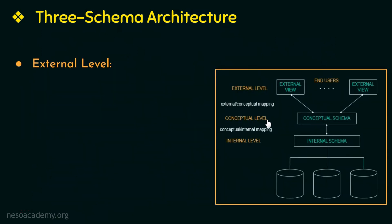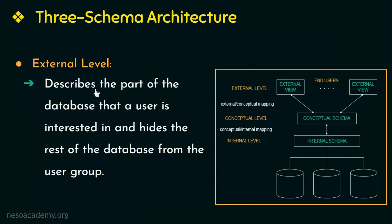The topmost level in our 3-schema architecture is the external level. The external level has a number of external schemas or external views, and each external schema describes the part of the database that a user is interested in and hides the rest of the database from that user group. So this level has a view for each user group.